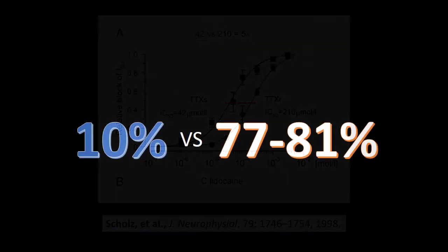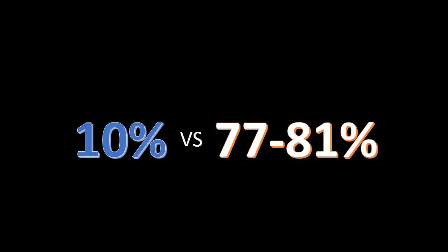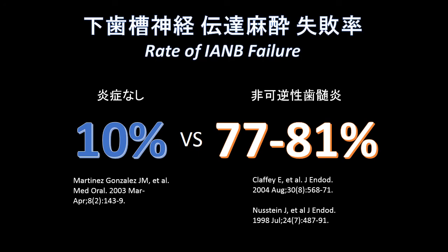なぜTTXRのナトリウムチャンネルが増えると良くないのか。それは、このチャンネルはリドカインによってブロックされづらいナトリウムチャンネルだからです。TTXRのチャンネルをブロックするためには、TTXSのチャンネルをブロックするのに必要なリドカイン濃度の5倍の濃度が必要となります。下歯槽神経伝達麻酔の失敗率は、正常な歯髄で10%に対し、非可逆性歯髄炎では約80%と、20%程度でしか奏効しないという結果が出ています。